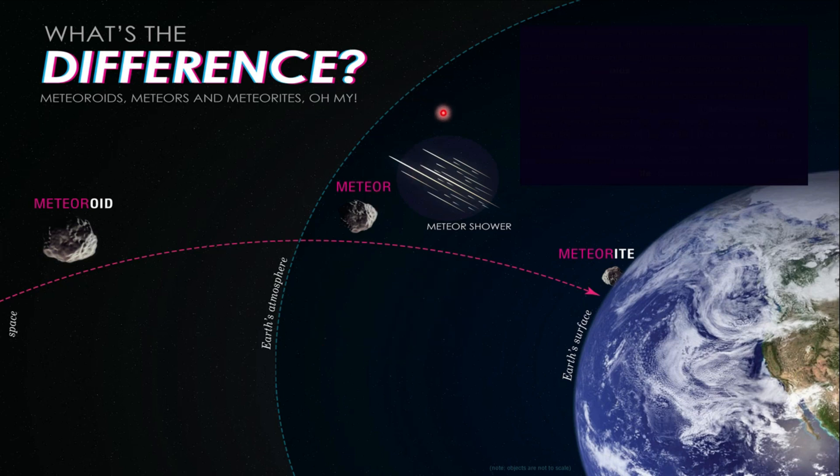Meteor showers will happen when many meteors enter the Earth at the same time. Once the meteor hits the ground of Earth, it will become a meteorite. This meteor will form craters as a result of meteorite impact.